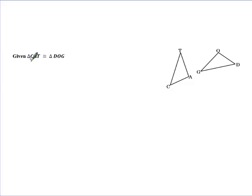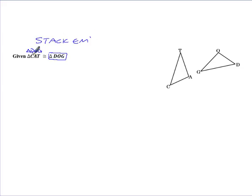I've given you here a statement that says triangle CAT is congruent to triangle DOG. Anytime you are given two congruent triangles, I highly recommend that you take this statement and stack it — triangle CAT on top of triangle DOG. The idea is that each of these parts match with one another. So D gets matched with C, O gets matched with A, G gets matched with T. Always stack them to understand which parts match with what.